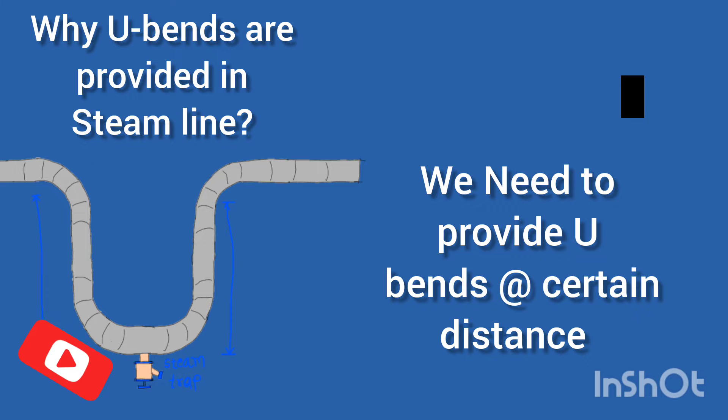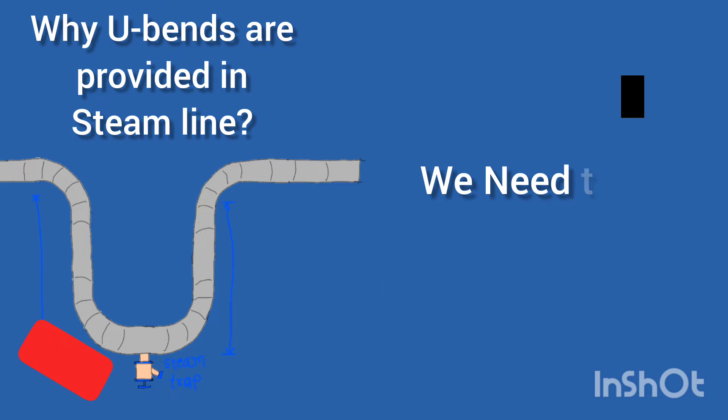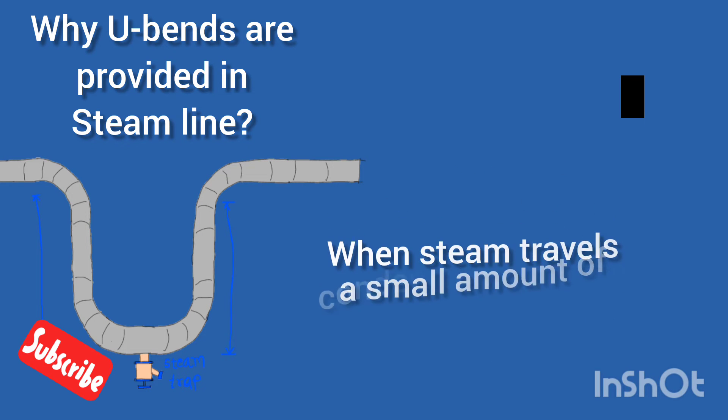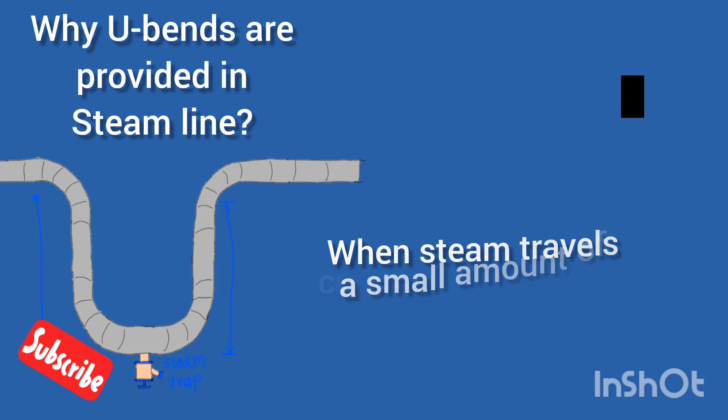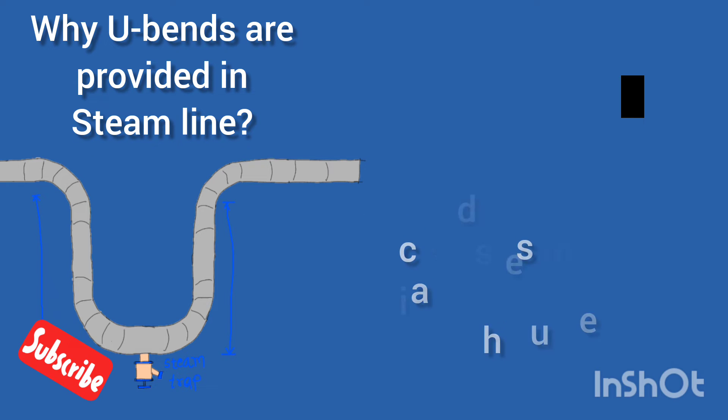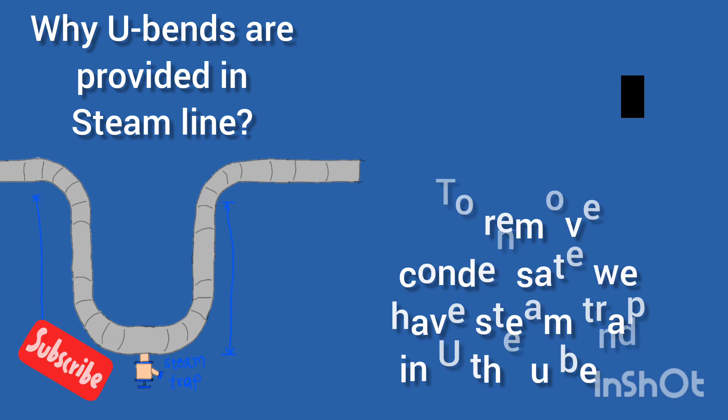When steam travels a certain distance, small amounts of condensate always form. We need to remove this condensate, and to remove this condensate we provide a U-bend or expansion bend at certain distances.